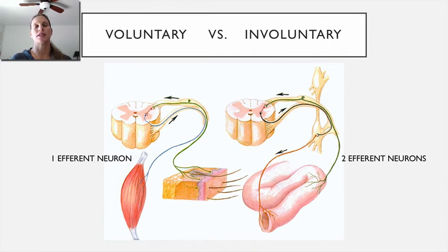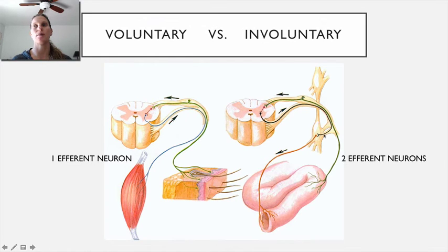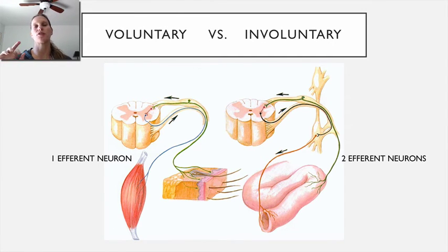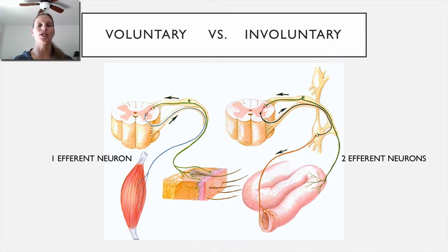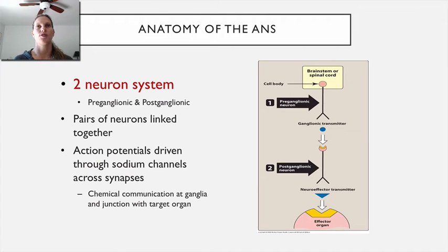In contrast, the parasympathetic and sympathetic systems — the involuntary or autonomic nervous system — always have two efferent neurons. You can see the first neuron outlined, and then a second neuron following it. It doesn't matter whether it's sympathetic or parasympathetic: there are always two efferent neurons. There are subtle differences in where those neurons exit and how long they are, but the key point is that it's a two-neuron system.